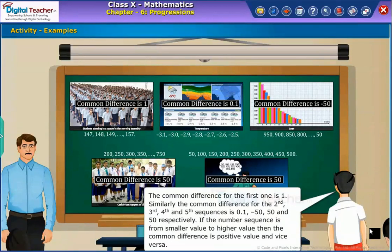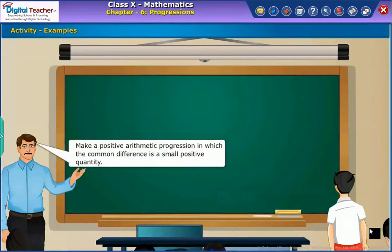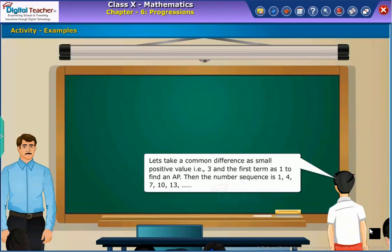If the number sequence goes from a smaller value to a higher value, then the common difference is a positive value, and vice versa. Now, make a positive arithmetic progression in which the common difference is a small positive quantity. Let us take a common difference as a small positive value, that is 3, and the first term as 1, to find an AP.